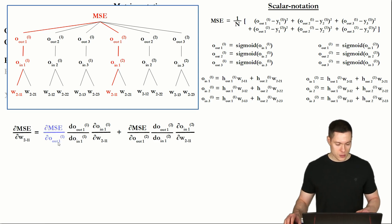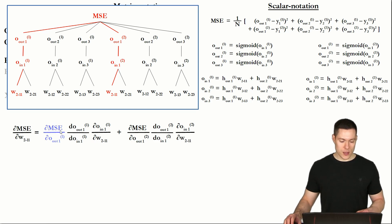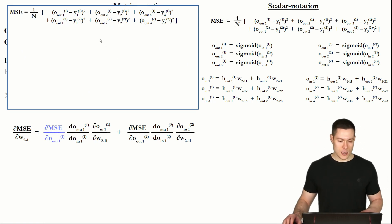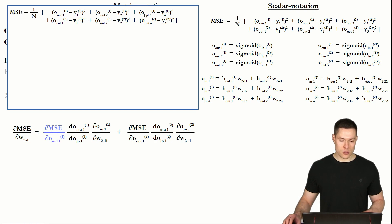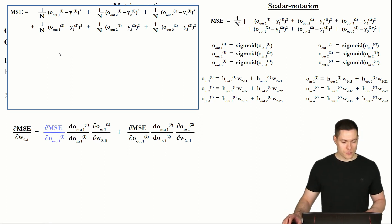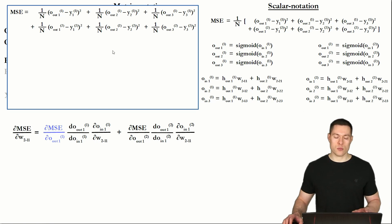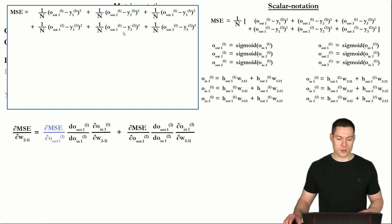So let's start off with the partial derivative of the mean squared error with respect to O_out 1 of example 1 — the derivative of our cost function. To make it a little bit easier to understand how we determine that partial derivative, let's first multiply out this 1 over n with each of those terms in the bracket. Then when we want to determine the partial derivative with respect to O_out 1 of example 1, all those other O_outs will be treated as a constant, so the derivative of that will be 0.